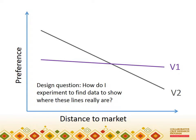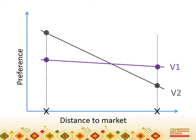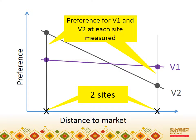The design question is one of choosing an experimental design that will give me points on the graph that will show where the lines really go. Is there a difference between varieties, and how does it depend on distance to market? If I want to know where a straight line goes, I only need two points, so perhaps I can just have two locations in my study — one close to market and one far from it — and do a simple trial at each site. That means an experiment at each site that will compare the two varieties and measure preferences for them.